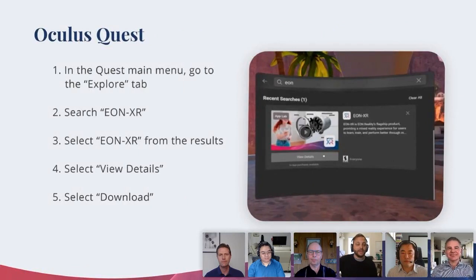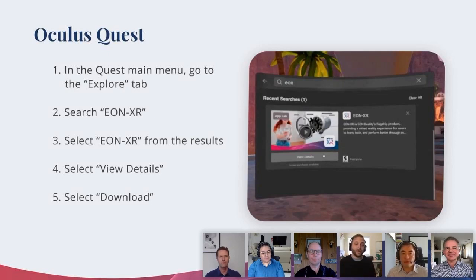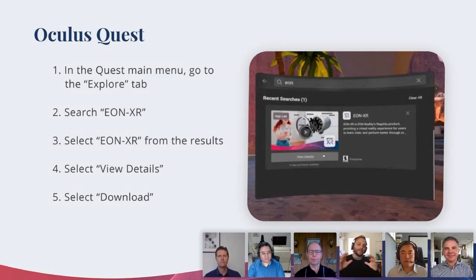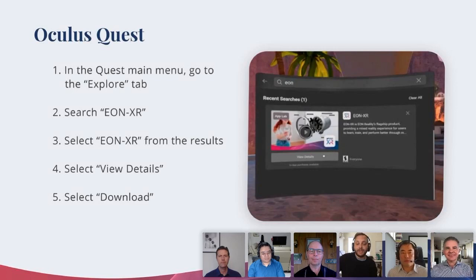If you are into VR and you have an Oculus Quest device, you can now get it more easily than ever because we are available on the Oculus App Labs. You can actually just put on the device and go to the Explore tab, which is the first tab in the main section, and you can search EonXR. From the results, you'll see the main set of results, and underneath you'll see App Lab results. EonXR will come up under the App Lab results. Click View Details, then select Download, and it'll look just like this.